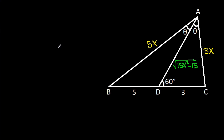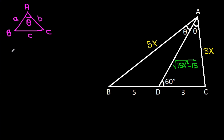Now, in any triangle ABC, if AB is A, AC is B, BC is C, and this angle is theta, then by the law of cosines: C² equals A² plus B² minus 2AB cos theta.